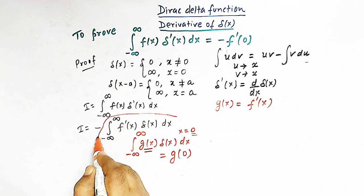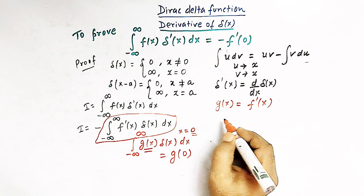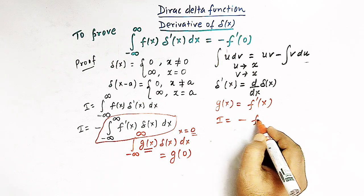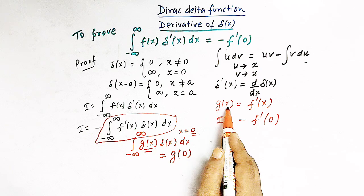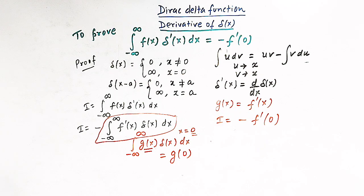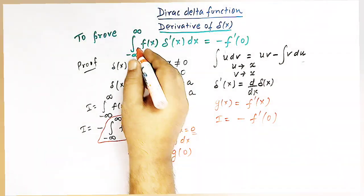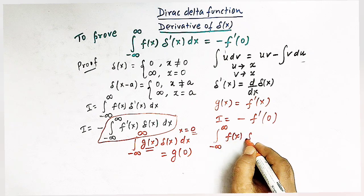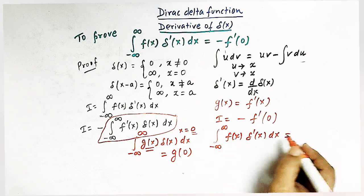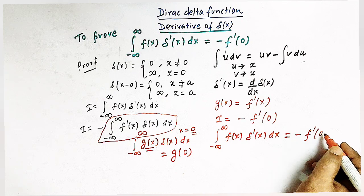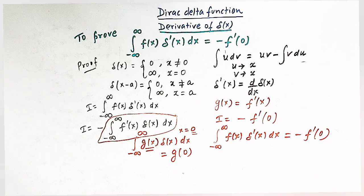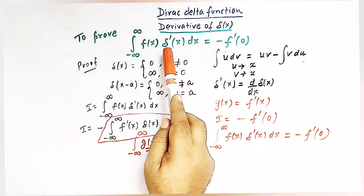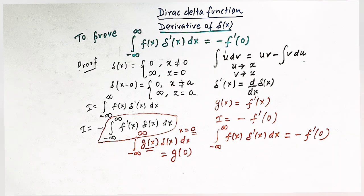The value of this integral is therefore negative of f prime of 0, since g(x) equals f prime of x gives g(0) equals f prime of 0. So the integral from minus infinity to infinity of f(x) times delta prime of x dx equals negative of f prime of 0. This is how we prove this property of the Dirac delta function involving the derivative of the delta function.